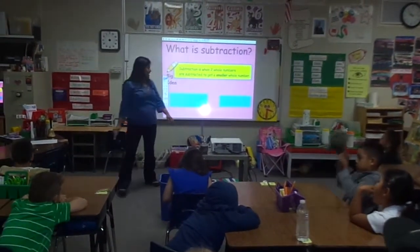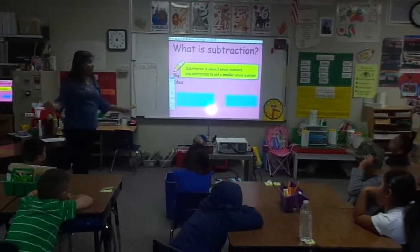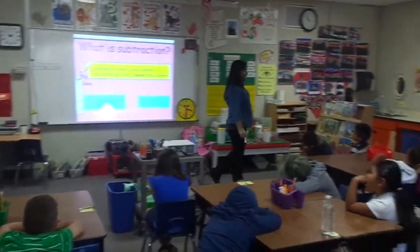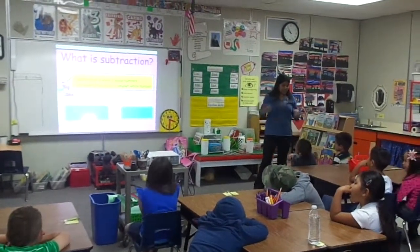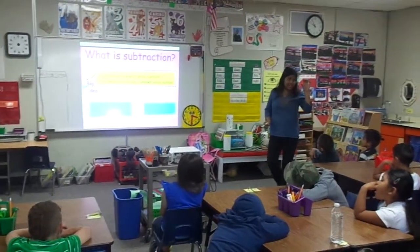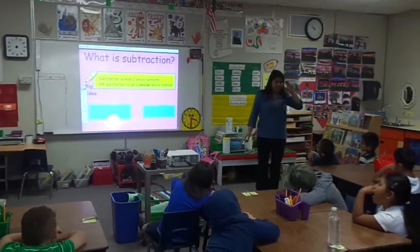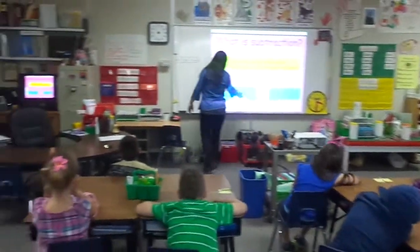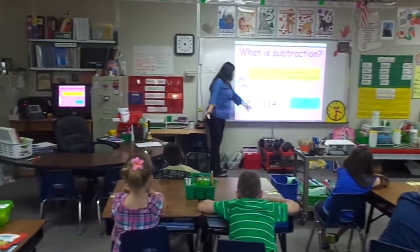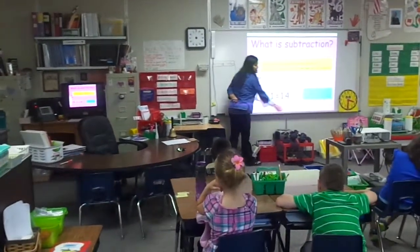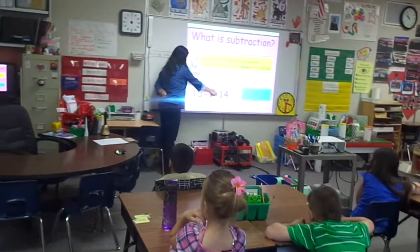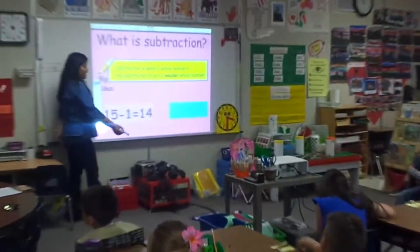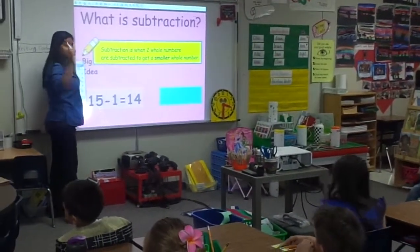What is subtraction? Subtraction is when you take two whole numbers and subtract to get a smaller number. With addition we're getting a big number, but with subtraction we're getting a smaller number. Like fifteen minus one equals fourteen. This is a big number and the sign is called minus — we call it subtract. The answer is fourteen, so we get a smaller number.